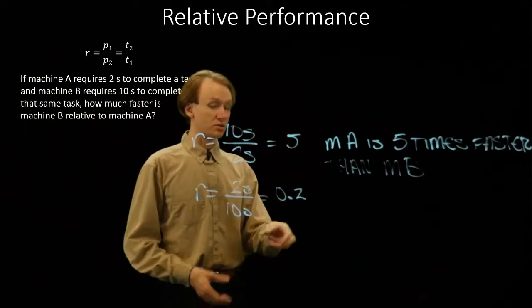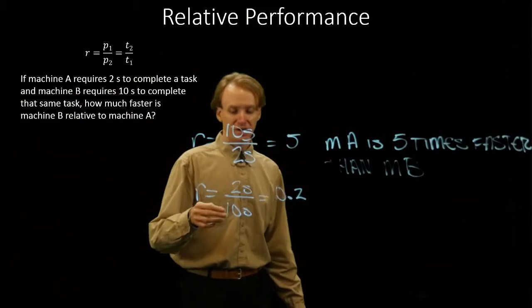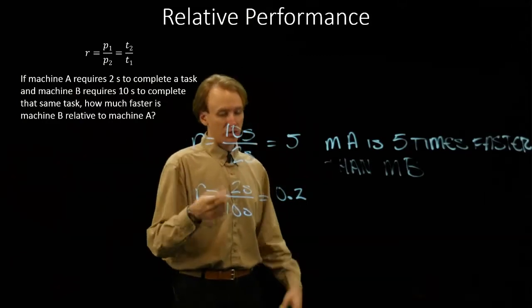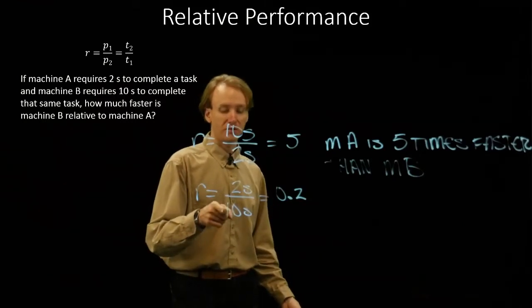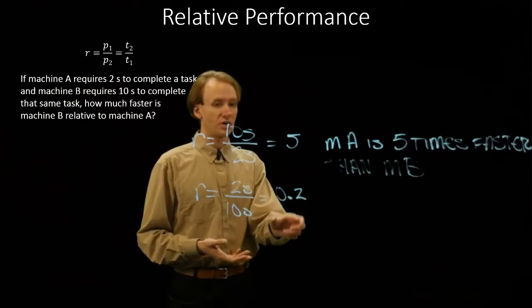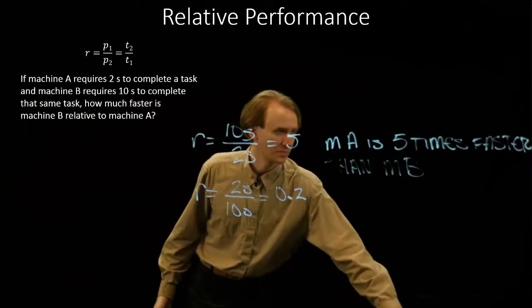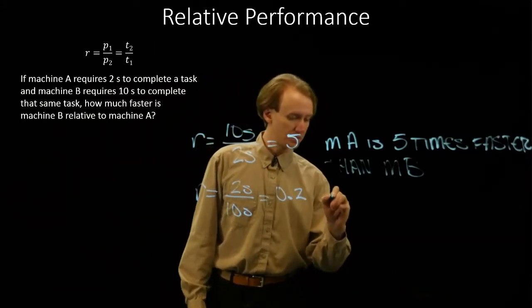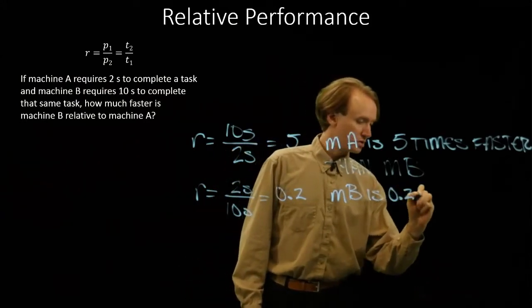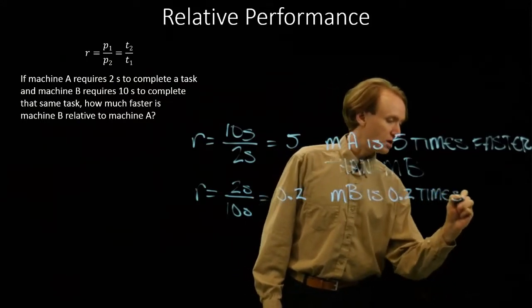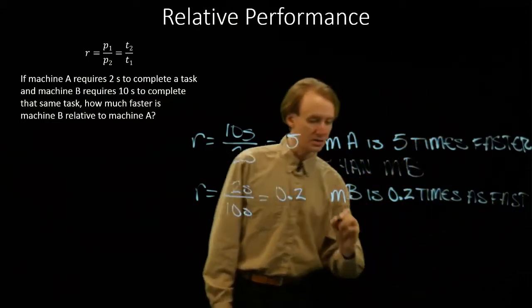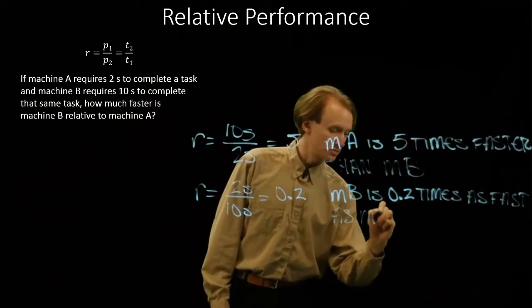So this time I have a number that's clearly less than one, and that's telling me that this machine here is much slower than this machine. Well, that's pretty obvious. Ten seconds is clearly more time than two seconds, so it makes sense the machine B gets a lower performance score relative to machine A.